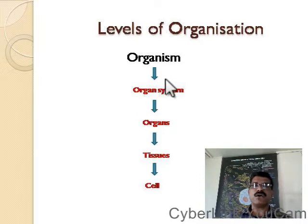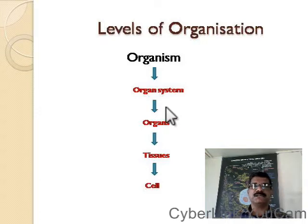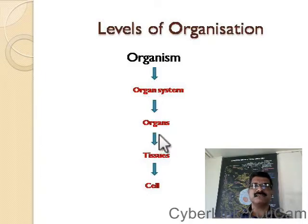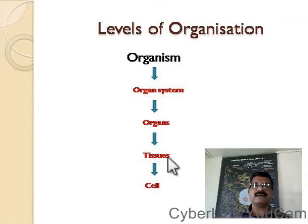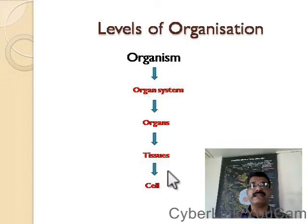Let us take one organ system, say for example the digestive system. The digestive system consists of different organs — mouth, tongue, esophagus, stomach and so on. And if you take one organ, say for example the tongue, that is an organ, but this organ is formed by the combination of different tissues.